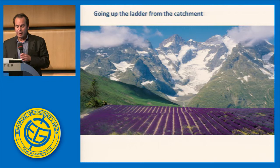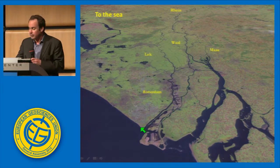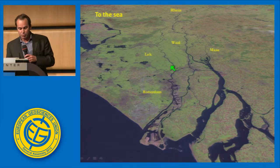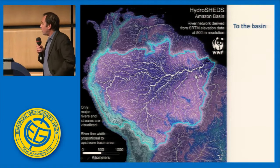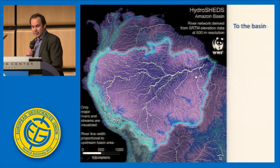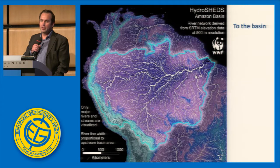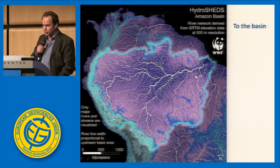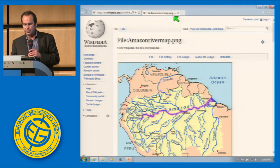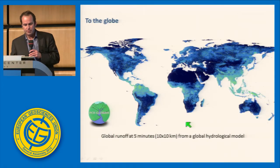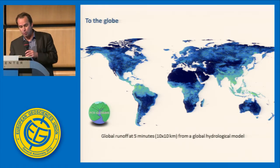We can also go up the ladder — from the catchment to the river, to the estuary or delta. Close to here is Rotterdam, where the Rhine enters the North Sea. This beautiful picture looks like blood vessels in tissue but it's the drainage network of the Amazon, determined from the shuttle topography mission by Lehner and co-workers. And finally, we go to the globe — a picture portraying runoff at five-minute resolution from our own global hydrological model.